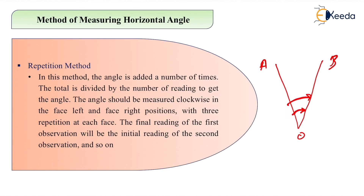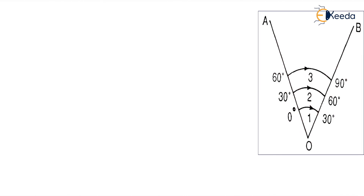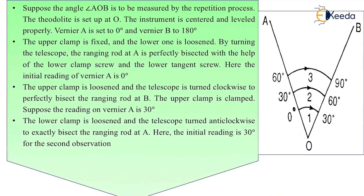We have to calculate the angle in the clockwise direction in face left as well as face right, with three repetitions at each face. The final reading of the first observation will be the initial reading of the second observation, and so on. Here I will explain how to do it.